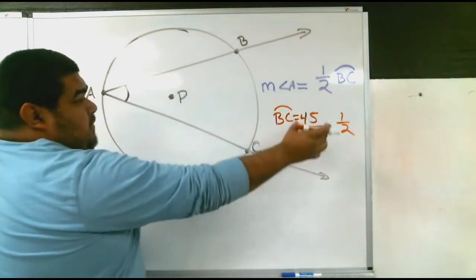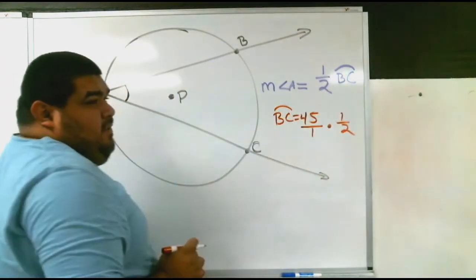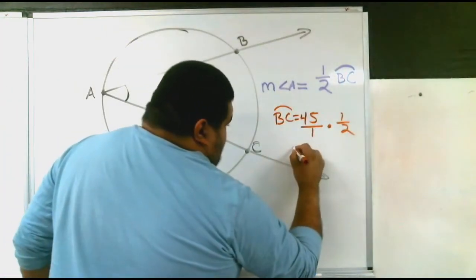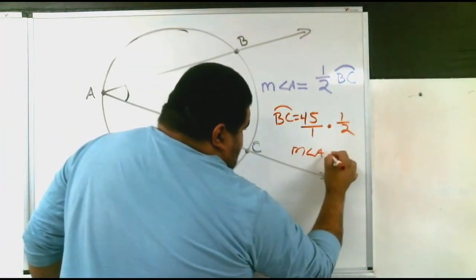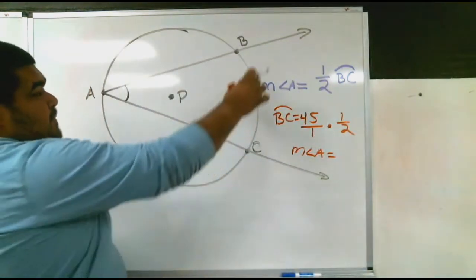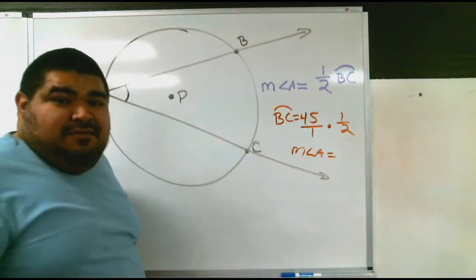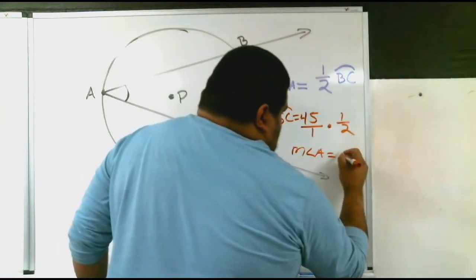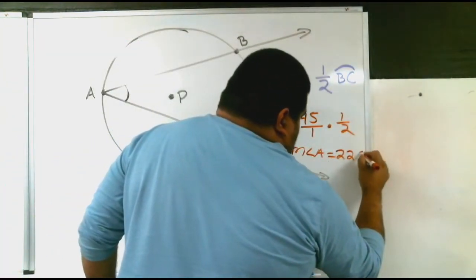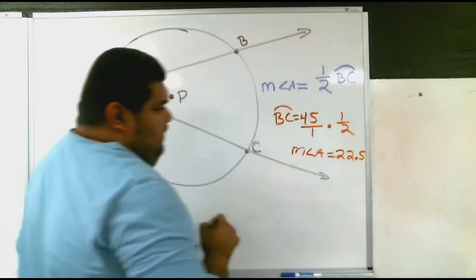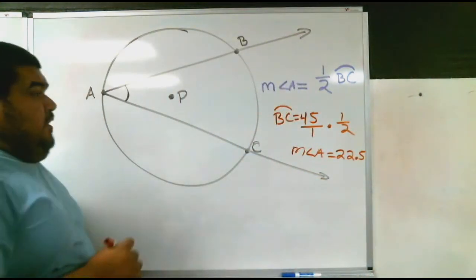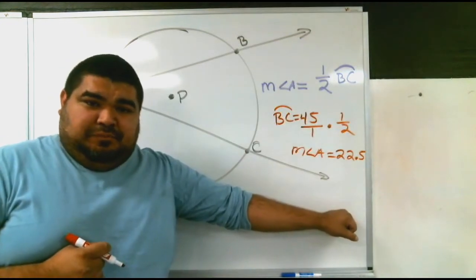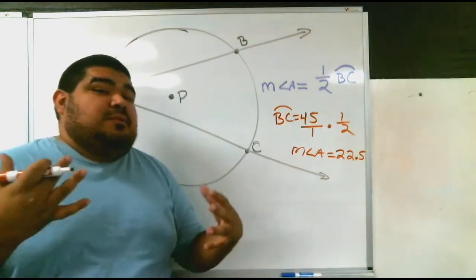That means that once you do half of the arc, it should give you measurement A. So measurement angle A, if BC is 45, half of 45 is 22.5. So the measurement of A is 22.5. Very simple concept.